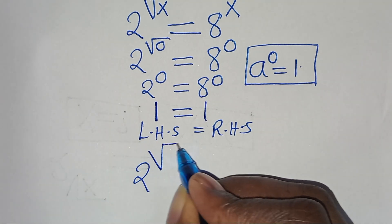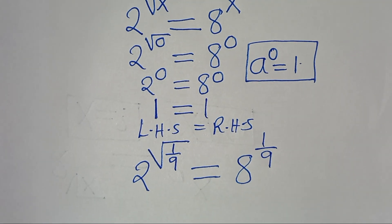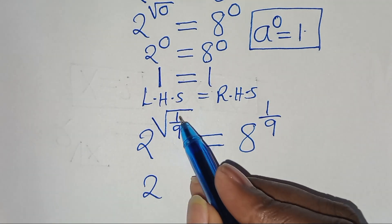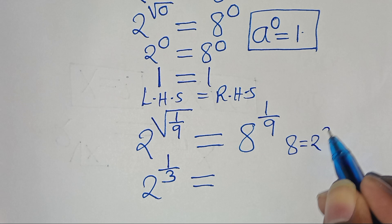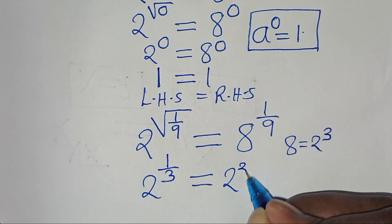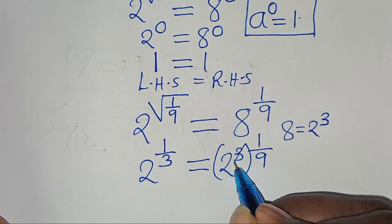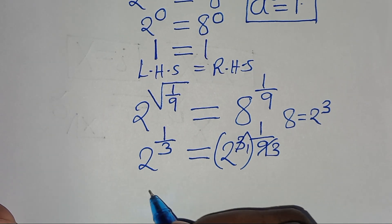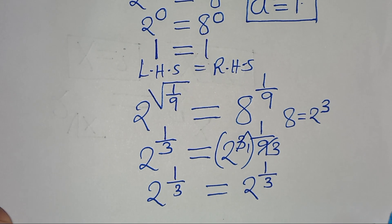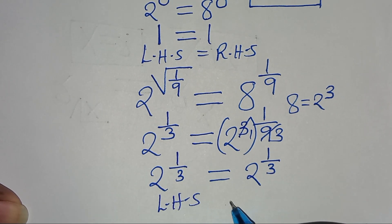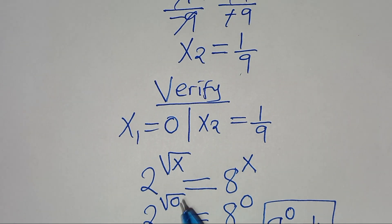Now let's take x₂ equals 1 over 9. We have 2 raised to the power of square root of 1 over 9, which equals 2 raised to the power of 1 over 3, and this equals 8 raised to the power of 1 over 9. We can express 8 as 2 to the power of 3, giving us 2 to the power of 3 raised to the power of 1 over 9. Simplifying, 3 times 1/9 equals 1/3, so we get 2 to the power of 1 over 3 on both sides. The left hand side equals the right hand side, confirming x₂ equals 1 over 9.